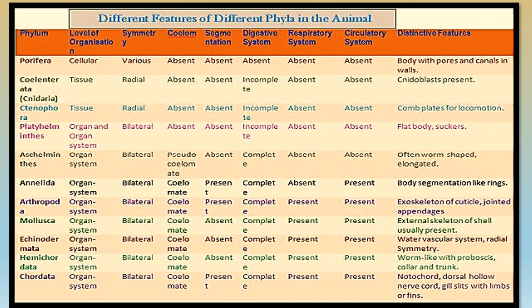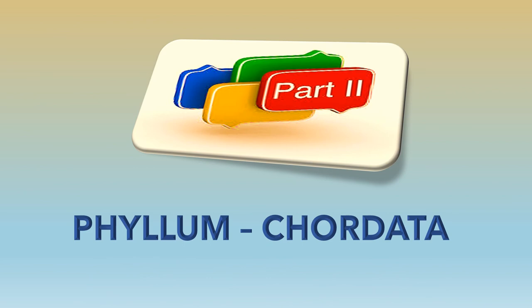Here is a table showing all the phylums at one glance. The portion covering symmetry, coelom, segmentation, and digestive system is omitted from your exam portion, but understanding these terms — radial, bilateral, pseudocoelomate — is necessary to write the characteristics. This table allows you to quickly see the distinctive features, type of symmetry, level of organization, and type of cavity for each phylum. We will continue about phylum Chordata in the next part.